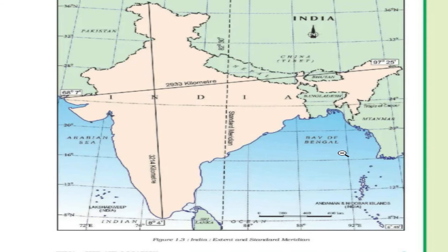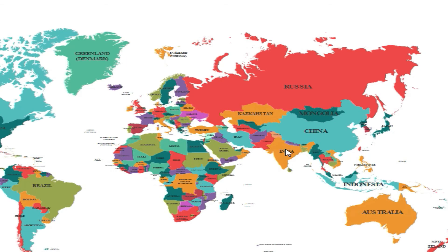The countries that are bigger than India are Russia, Canada, USA, China, Brazil, and Australia — in that order. Russia is easily the biggest. You can use a mnemonic to remember this order: Russia, Canada, USA, China, Brazil, Australia.